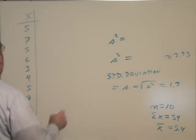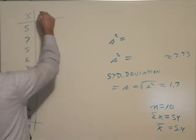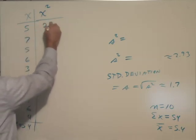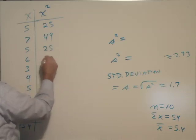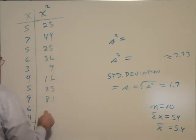All right, now, this other method of calculating standard deviation, I'm going to square all the numbers in these columns. So x squared, 5 squared is 25. There's 49, 25, 36, 9, 16, 25, 81, 36, and 16.